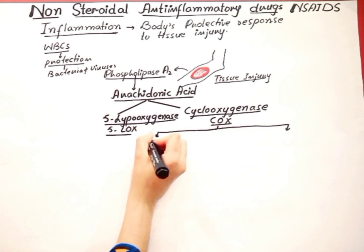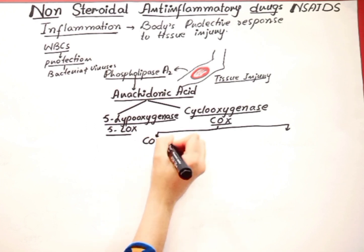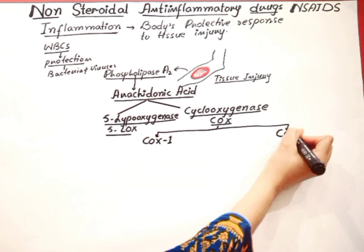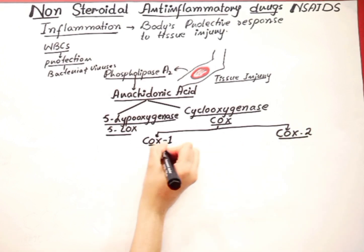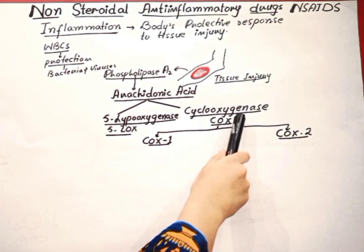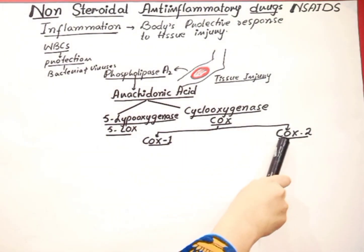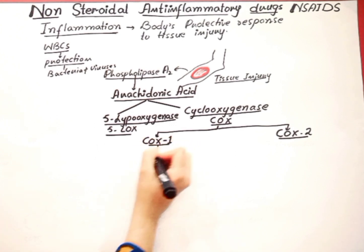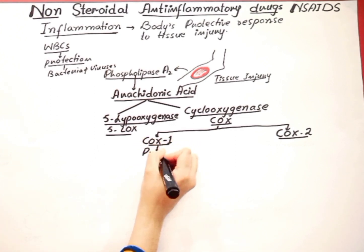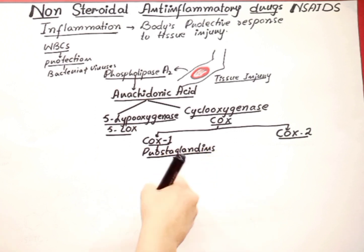These cyclooxygenase enzymes are a group of enzymes present in different forms, two of which are COX-1 (cyclooxygenase-1) and COX-2 (cyclooxygenase-2). These COX-1 and COX-2 enzymes are responsible for the production of prostaglandins, and prostaglandins are responsible for inflammation in tissues. These are the pain mediators.